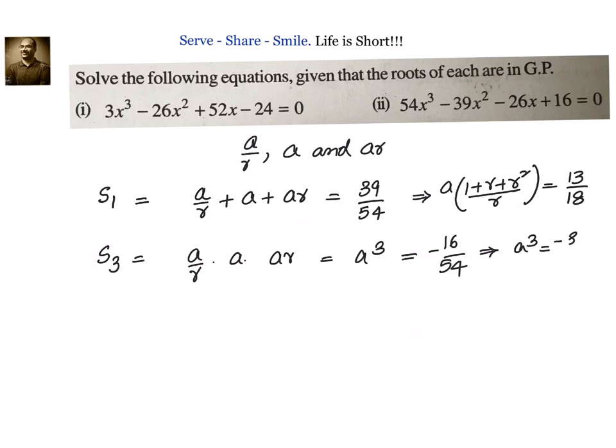after simplification, -8/27, which gives me a equals to -2/3. Now we know a equals to -2/3, so why can't we substitute and find out r value? So let's go ahead